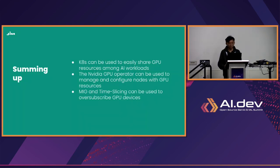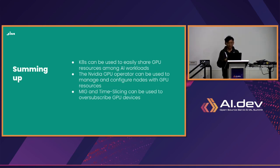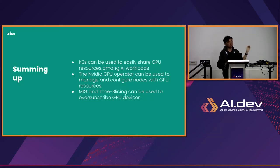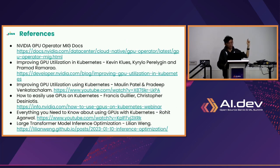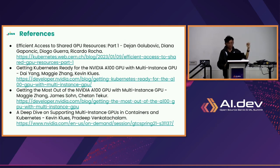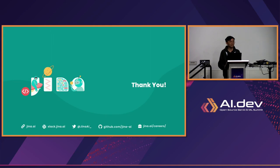In summary: Kubernetes can be used to easily share GPU resources among workloads. The NVIDIA GPU operator manages and configures nodes with GPU resources. To oversubscribe a GPU device, you have two options: MIG, which physically partitions the GPU, or time slicing, which does a shared round-robin context-switching approach. Thank you.